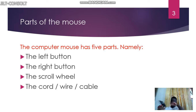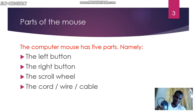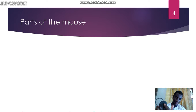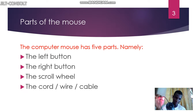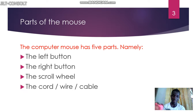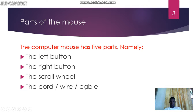So we have the left button, the right button, the wheel, and the body. Then there is the cord, or wire, or cable — that's what you are seeing here. We'll be learning about how to use all these parts.